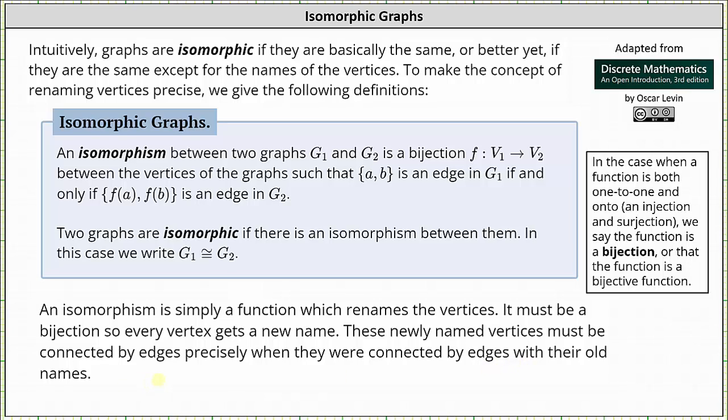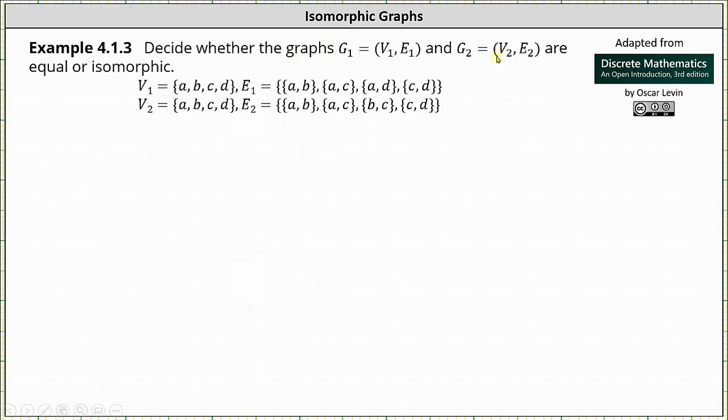Let's take a look at an example. Decide whether graphs G1 and G2 are equal or isomorphic. The graph G1 has vertices A, B, C, and D and edges AB, AC, AD, and CD. The graph of G2 has vertices A, B, C, and D with edges AB, AC, BC, and CD.